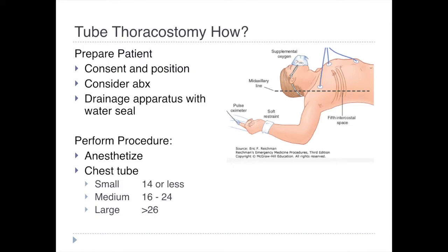When performing the procedure, there are a couple of things to consider first. One is the type of anesthetic we're going to use. We could use lidocaine or bupivacaine if we want a longer-acting local anesthetic, with or without epinephrine. For lidocaine with epi, the maximum weight-based dose is 7 mg/kg, and without epi it's 4.5 mg/kg. For bupivacaine, it's 3 mg/kg with epi and 2.5 mg/kg without.